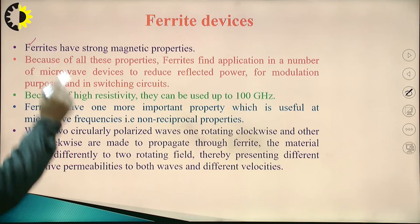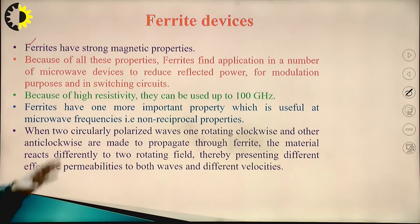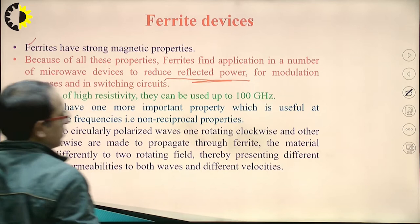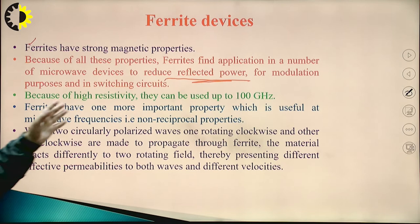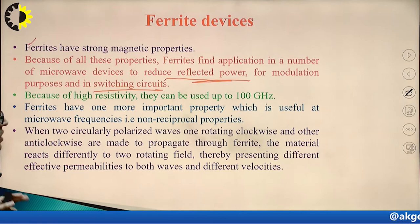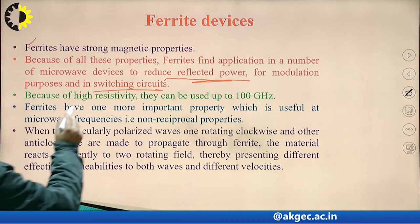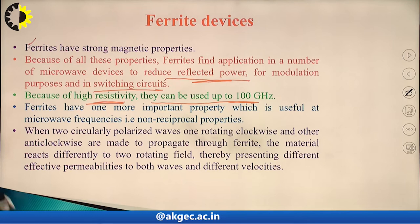Ferrite devices have higher magnetic properties, and because of all these properties, ferrites can be used for microwave devices such as circulators and isolators — to reduce reflected power, for modulation purposes, for amplification, and in switching circuits for microwave devices. Because of their high resistivity, they can be used up to 100 GHz.